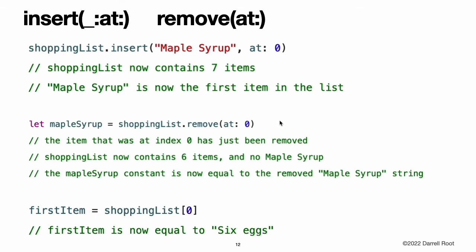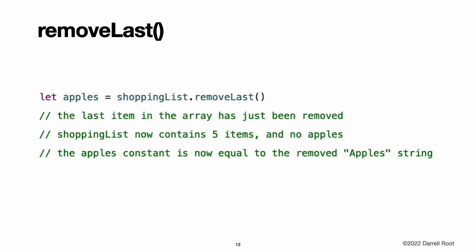Similarly, you remove an item from the array with the remove(at:) method. This method removes the item at the specified index and returns the removed item, although you can ignore the return value if you do not need it. Any gaps in an array are closed when an item is removed, so the value at index zero is once again equal to six eggs. Note: if you try to access or modify a value for an index that is outside of the array's existing bounds, you will trigger a runtime error. The largest valid index in an array is count minus one because arrays are indexed from zero. If you want to remove the final item from an array, use the removeLast method rather than remove(at:) to avoid querying the array's count property. Like the remove(at:) method, removeLast returns the removed item.